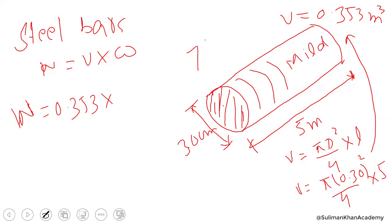Now, the unit weight of mild steel bar is 7,850 kilograms per cubic meter. You have to put that value over here.